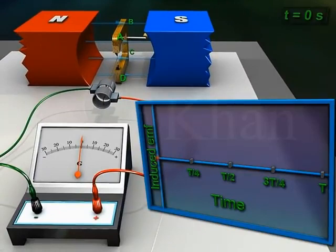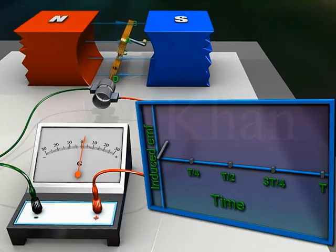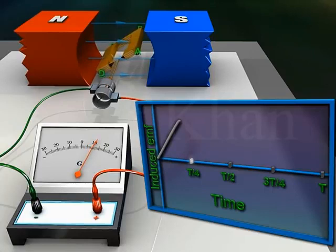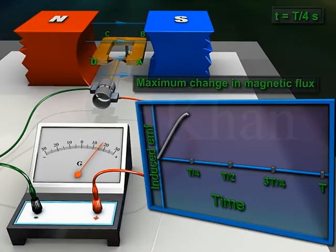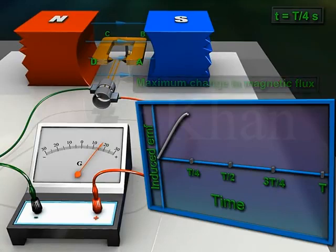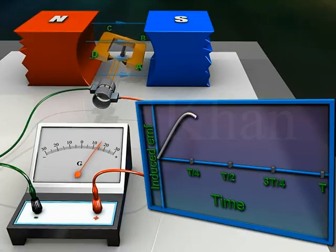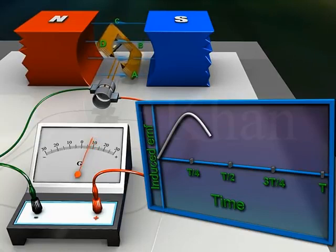During the first quarter rotation, the induced EMF increases. Then at time t/4 seconds, the armature becomes horizontal. At this position, the rate of change of magnetic flux momentarily attains the maximum value, therefore the induced EMF is maximum. During the second quarter rotation, the induced EMF decreases.